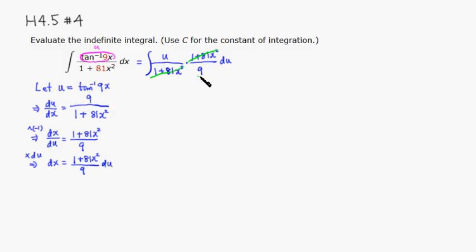Then you have a 9 on the bottom. Since this is just a constant, I'll place it in front of the integral. So you will get 1 over 9 integral u du.